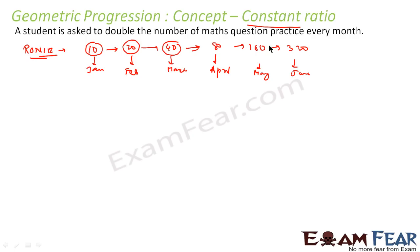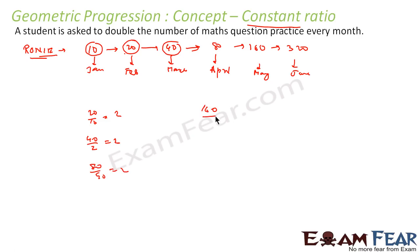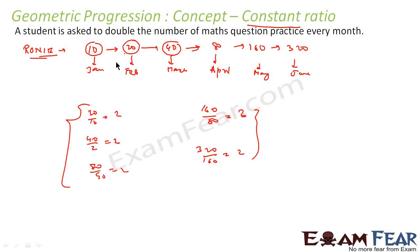In GP we have a constant ratio. For example, 20 divided by 10 is 2; 40 divided by 20 is 2; 80 divided by 40 is also 2; 160 divided by 80 is also 2; and 320 divided by 160 is also 2. So the ratio is constant between any two consecutive numbers — such a sequence is called a geometric sequence or geometric progression.